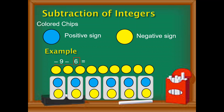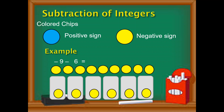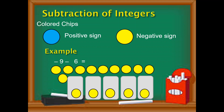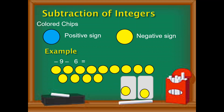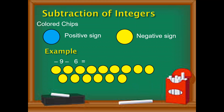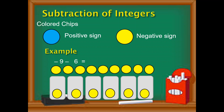Now we can remove the six blue chips from the zero pairs — one through six. The remaining yellow chips from the zero pairs are combined with the original nine yellow chips. All the yellow chips total fifteen. Dahil siya ay yellow, ibig sabihin negative siya. So negative nine minus six is equal to negative fifteen.